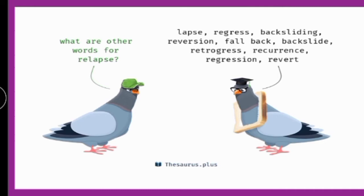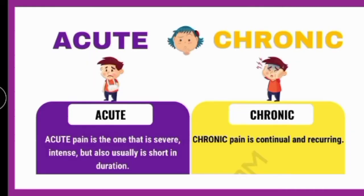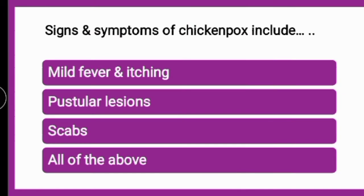Acute and chronic are both types of pain. Acute is severe but for a very short duration, while chronic is continuous and reoccurring over a longer period of time. So the types of symptoms — acute, chronic, relapsing, remitting — the answer was all of the above. Next question: signs and symptoms of chickenpox include dash.